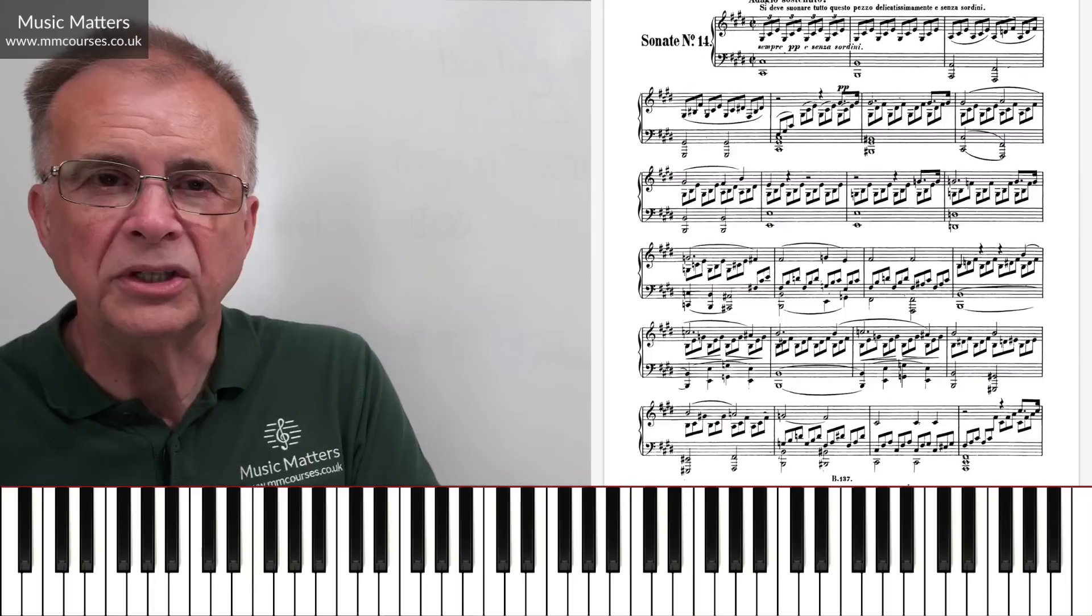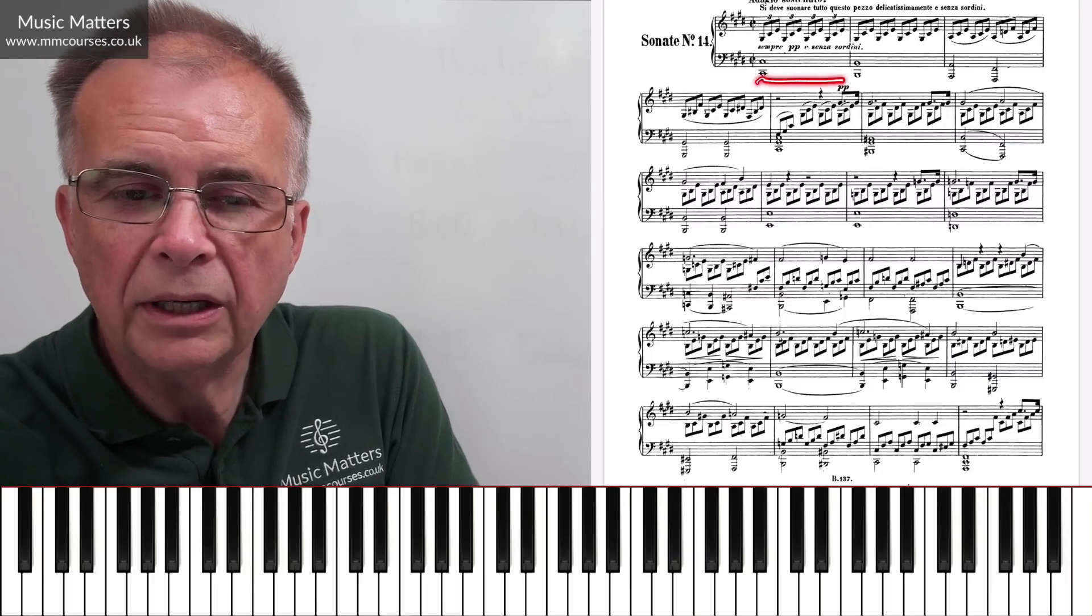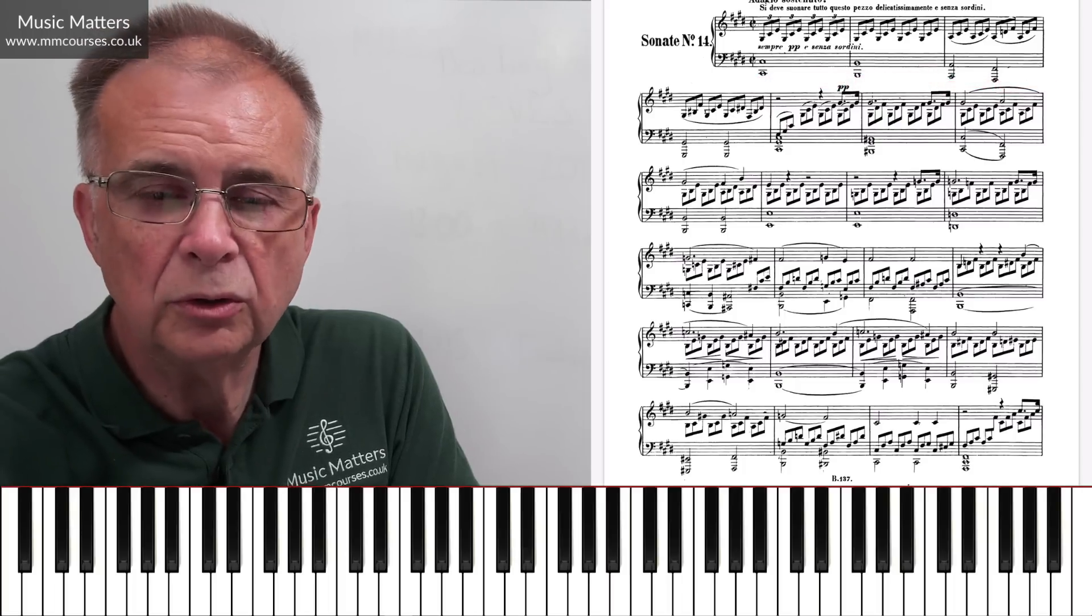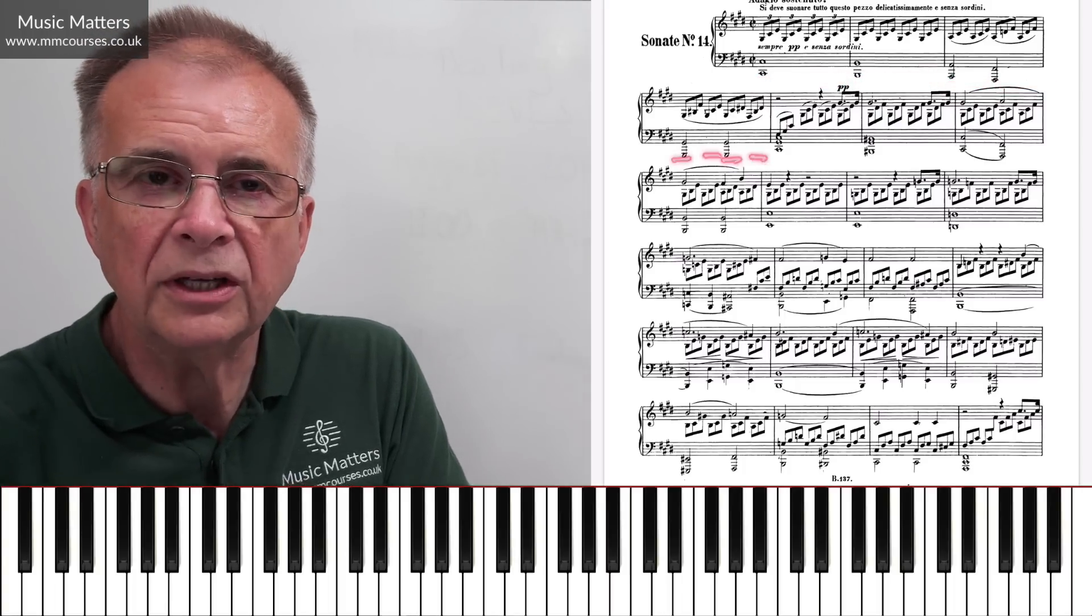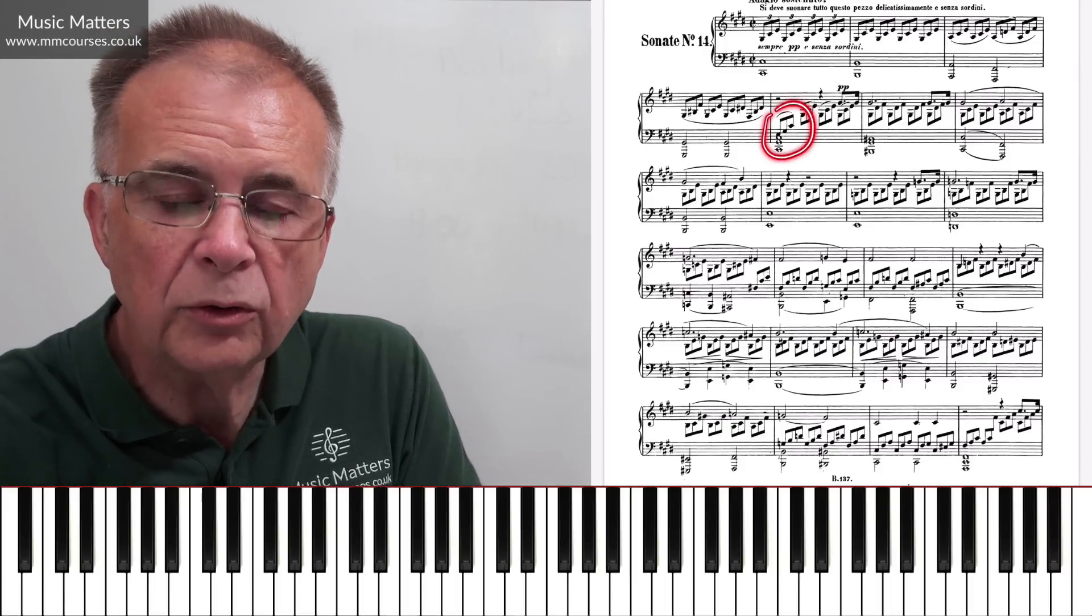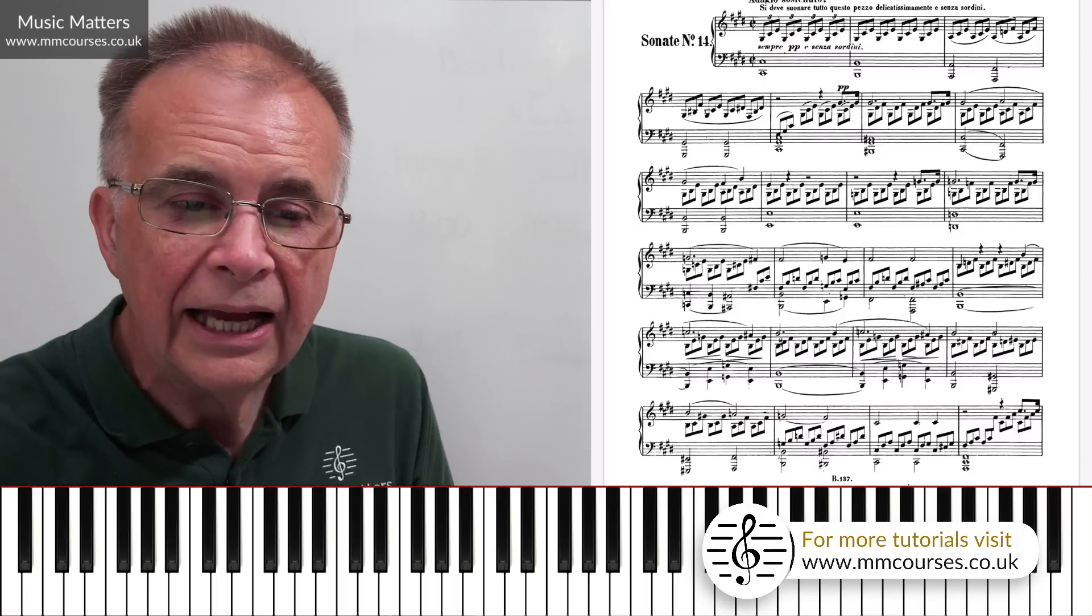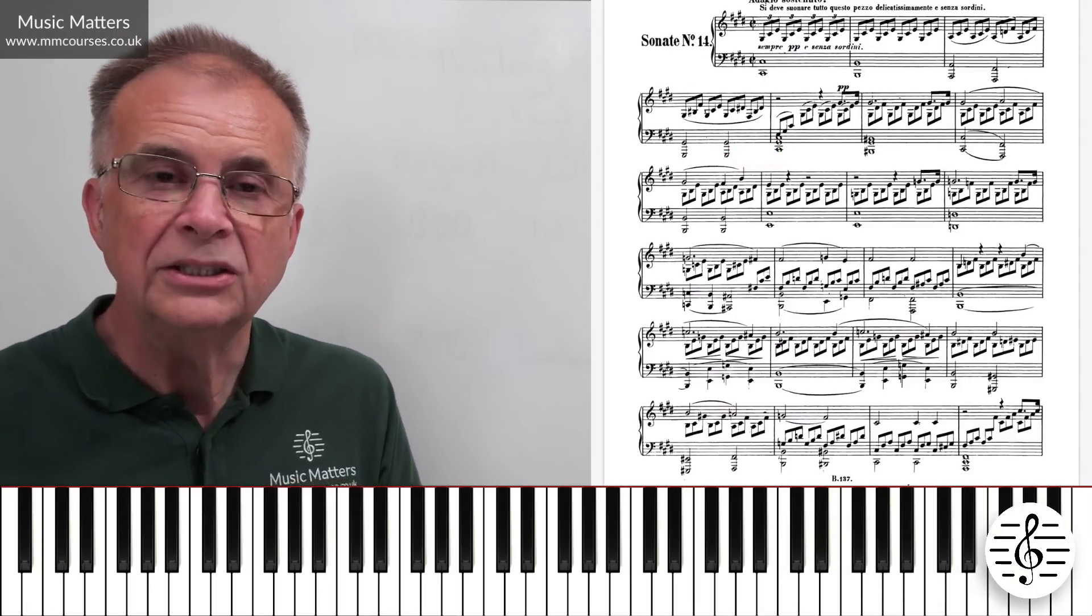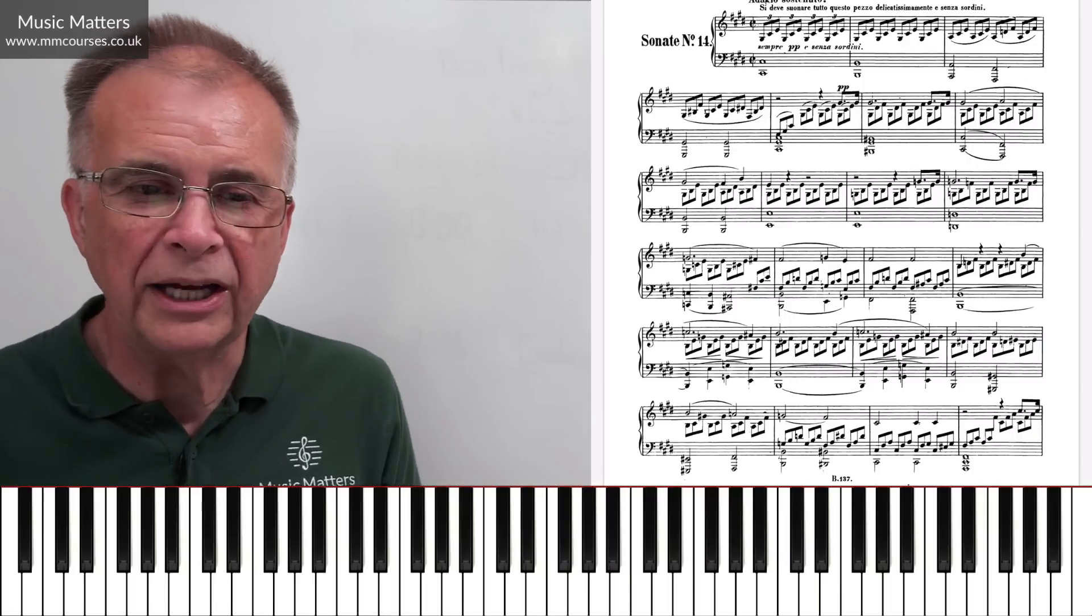He's speeding up the harmonic rhythm on the approach to the first cadence. So one bar, one bar, two chords and a half bars there, and then changing on every one of those quarter notes or crotchets in that bar, until we arrive at a cadence there, a tonic chord cadence, and this is a perfect cadence, going from the dominant to the tonic. That's our first statement. It's the introduction, the four bar introduction.